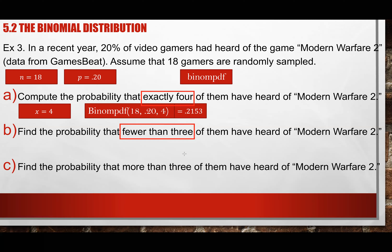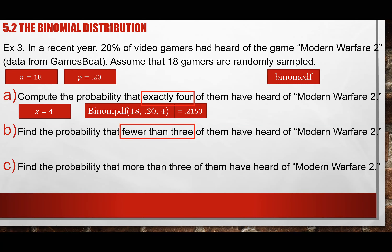The next question asks: find the probability that fewer than three people heard about this game. Fewer than three means less than three — so zero, one, and two people are the possibilities. Three cannot be fewer than three. Because there's an accumulation of points, we use the binomial CDF.